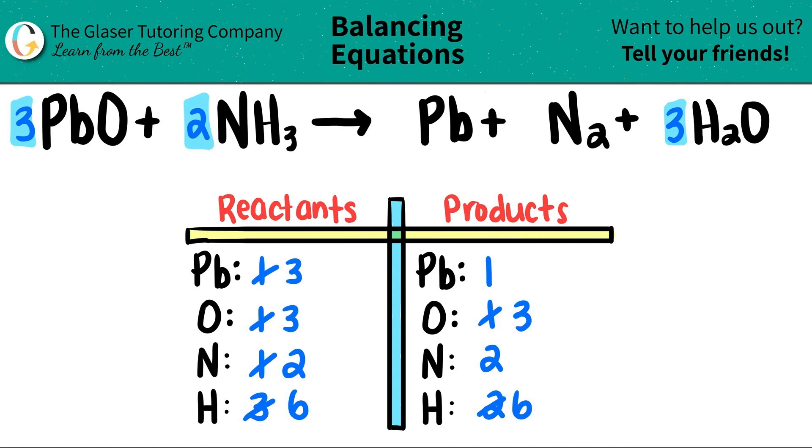The only thing left to balance now is the lead. One times what will get me three? One times three. That number that you stated is the coefficient. And in this case, I don't have to worry about being fair because it was just lead. So you're done. And this now turns into three.